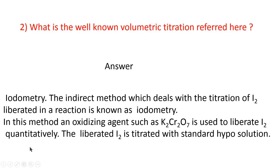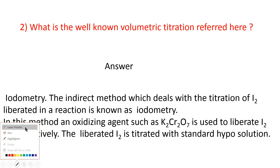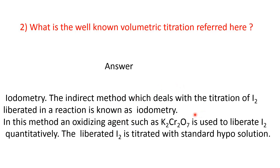Iodometry is the indirect method which deals with the titration of iodine liberated in a reaction by sodium thiosulfate. In this method, an oxidizing agent such as potassium dichromate or other oxidizing agent is used to liberate iodine quantitatively, which is titrated with standard hypo solution.